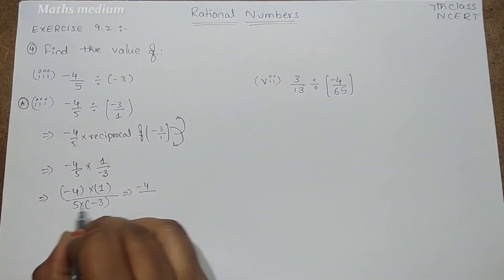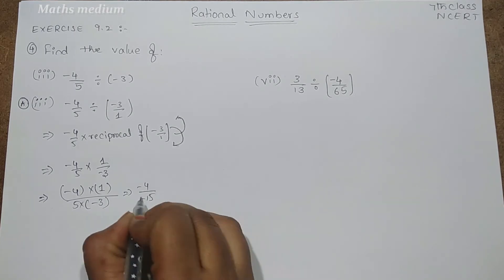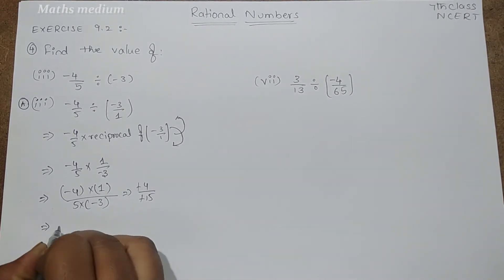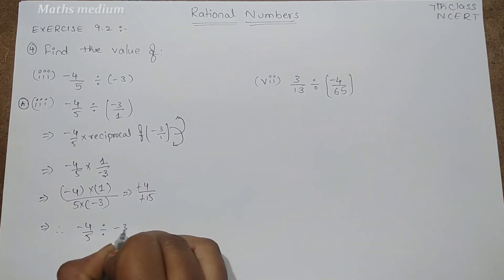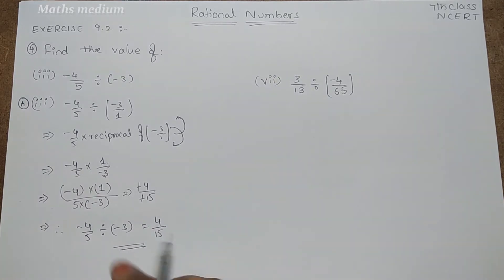So -4/(-15), minus minus gets cancelled. Therefore -4/5 divided by -3 is equal to 4/15, the answer for this one.